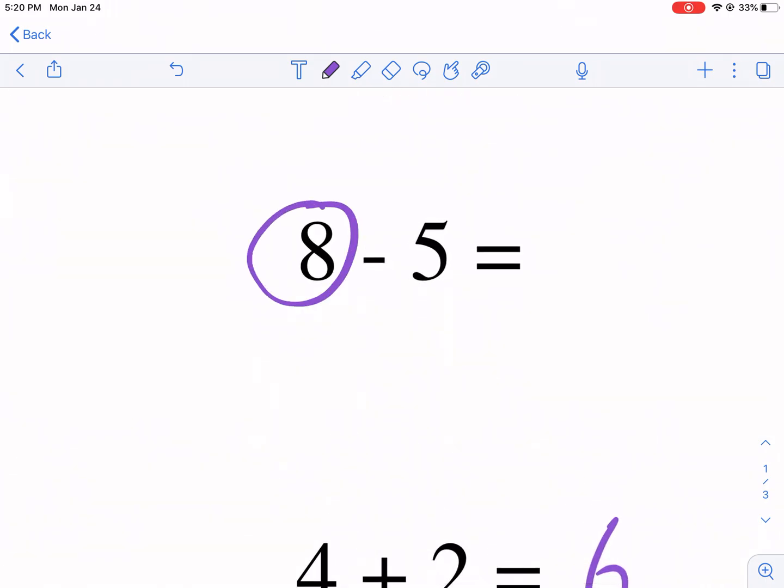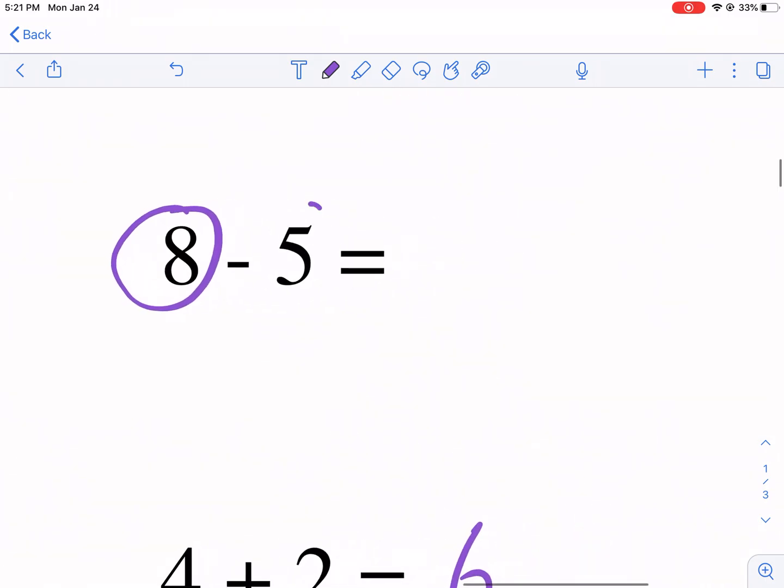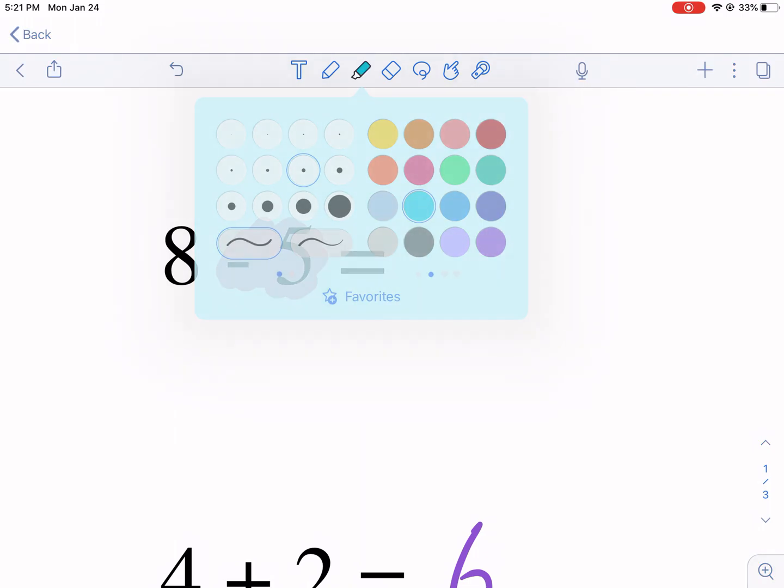Here we have our positive eight. Here we have a negative five. And you're like, what? That's a positive five that we're subtracting. It's the same thing. This is a negative five. This is a positive eight.